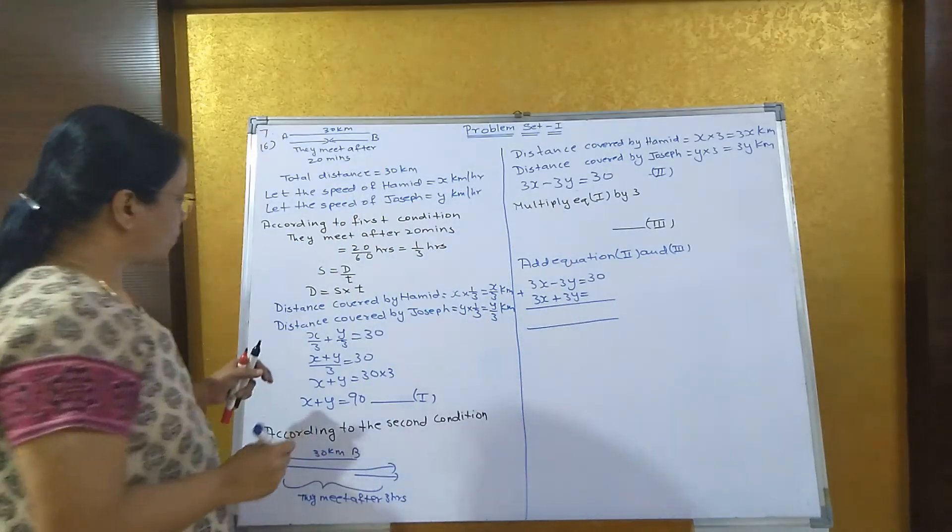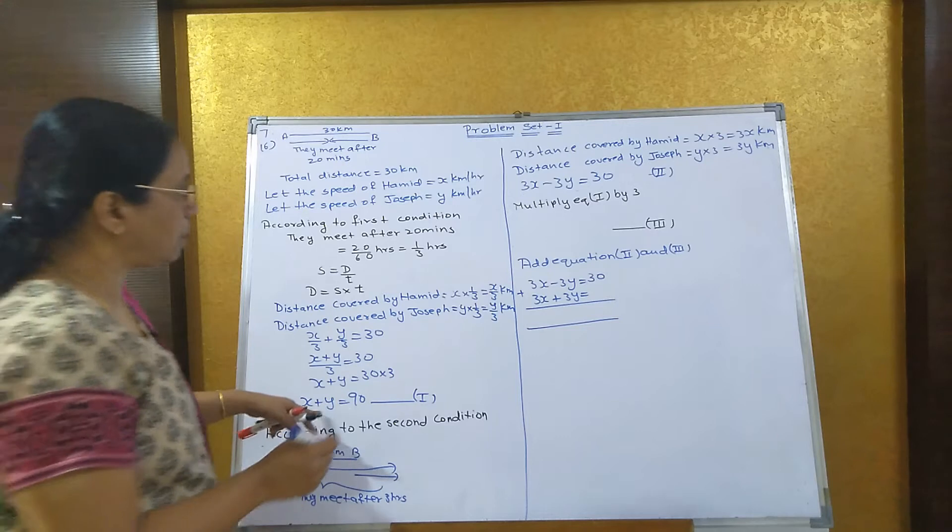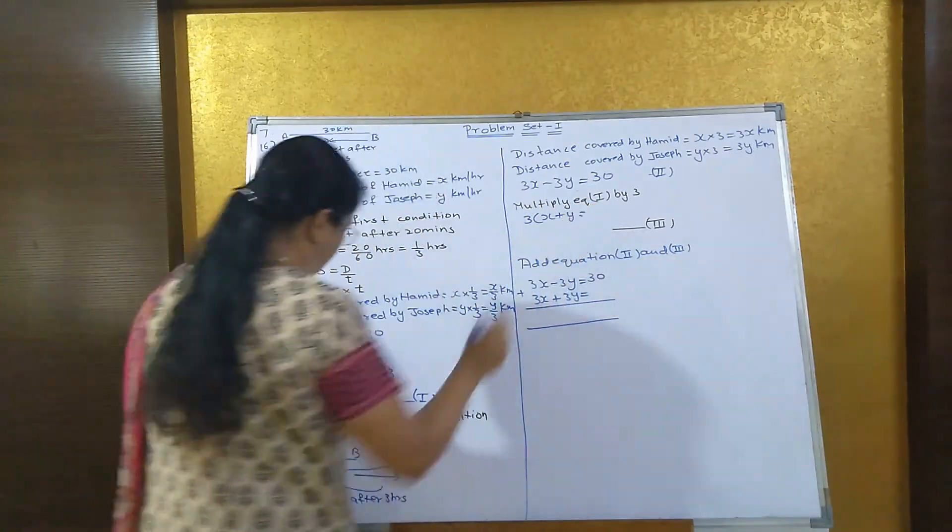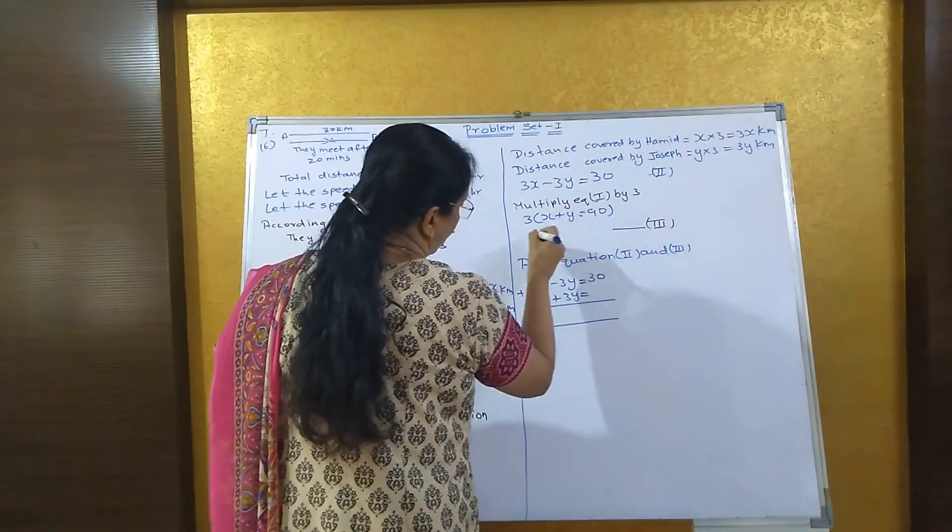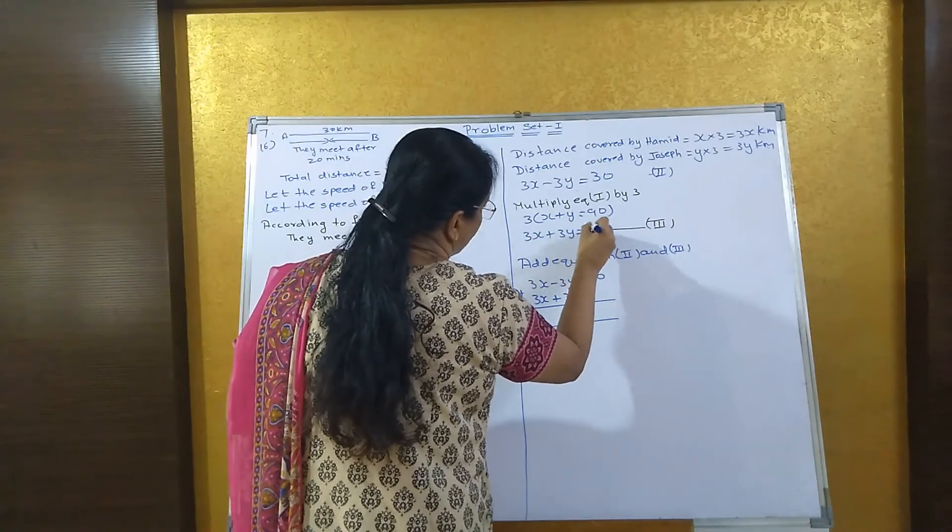Now in order to make the coefficient of y the same, we multiply this equation by 3. So 3 into x plus y equals 90. When you multiply, you get 3x plus 3y equals 270.